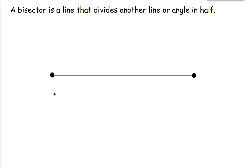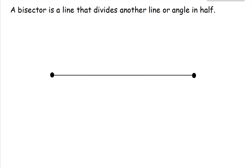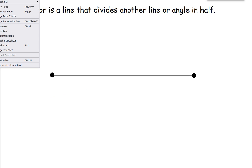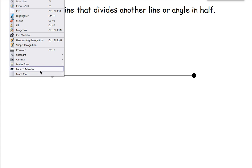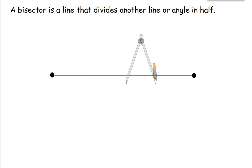One, I could measure this line and figure out how long it is and divide it by two — that would tell me how long it would be to the middle. But let's say I don't have a ruler and I only have a compass. So to find the bisector with a compass, we do it like this.